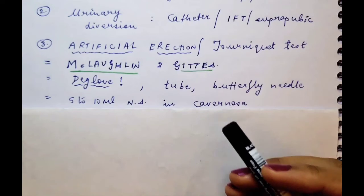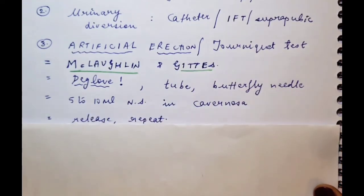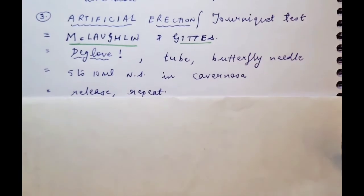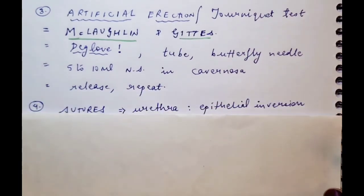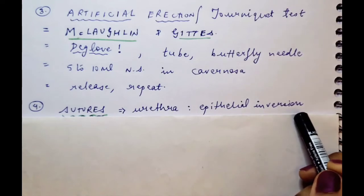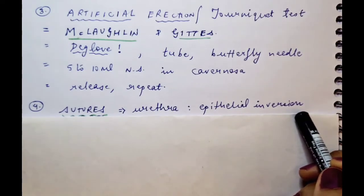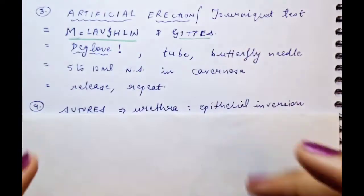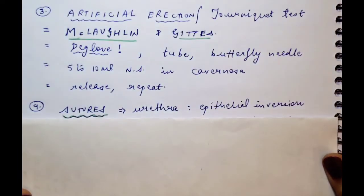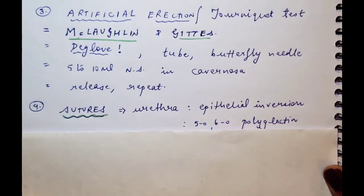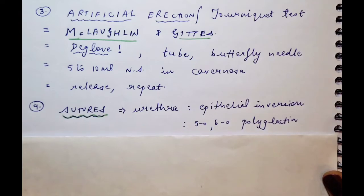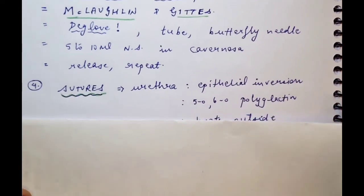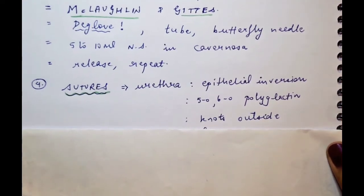This test is basically done to judge the degree of chordee in hypospadias because it has to be released completely before you go to urethral reconstruction. After the chordee is released and the fibrous tissue is excised, you repeat the test — so you do the test, release the chordee, and again repeat the test to make sure no amount of fibrosis is left behind. As for suture materials, for the urethra it is very important that the sutures cause epithelial inversion — not eversion as done for skin. So the edges unite properly and there is no fistula formation, which is the commonest complication. Sutures such as 5-0 or 6-0 polyglyctin — usually quick absorbable sutures — are preferred, and the knots have to be outside and not towards the lumen.